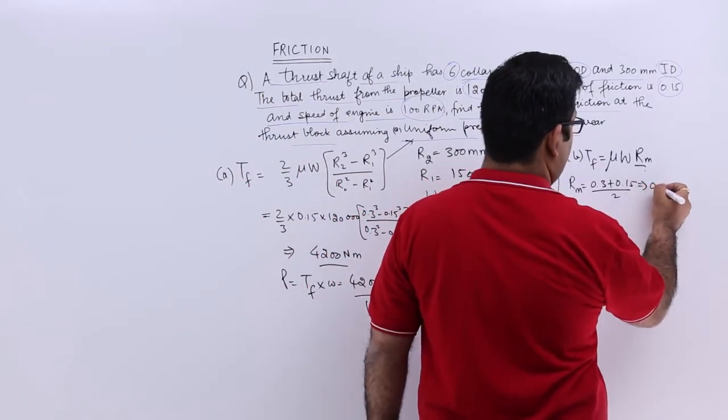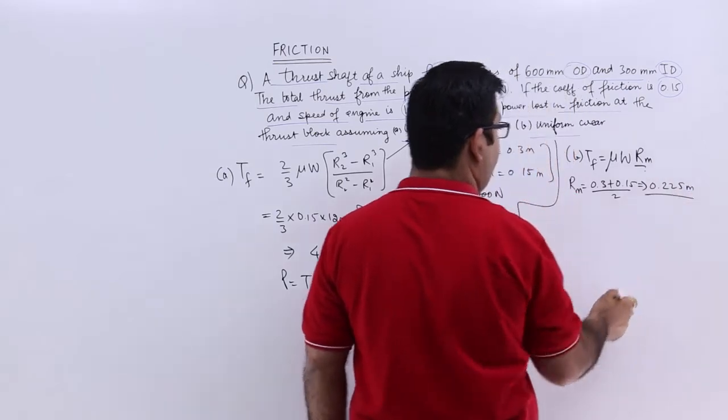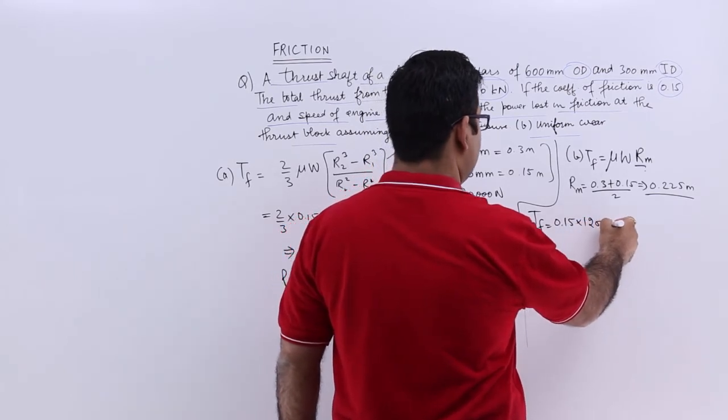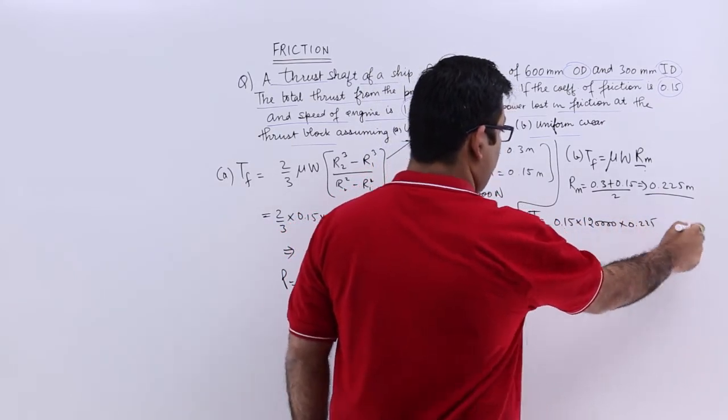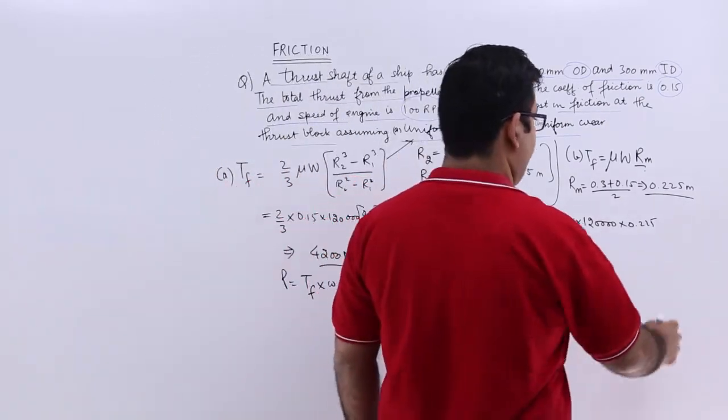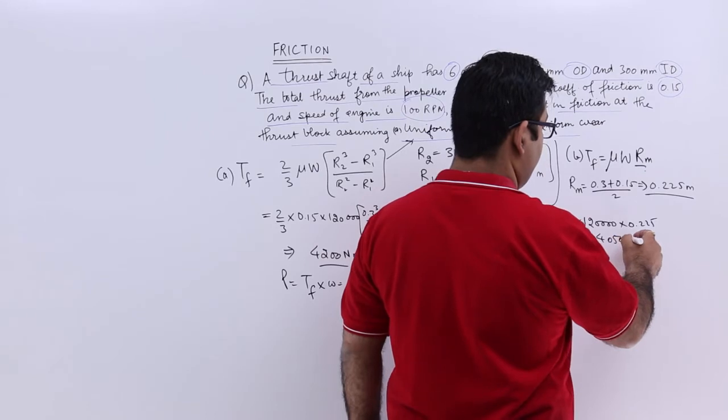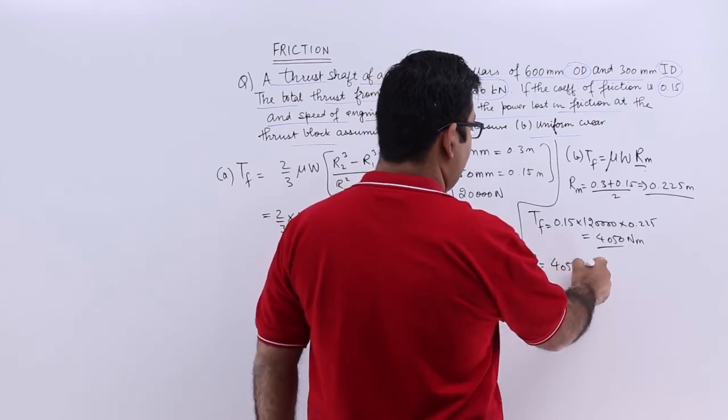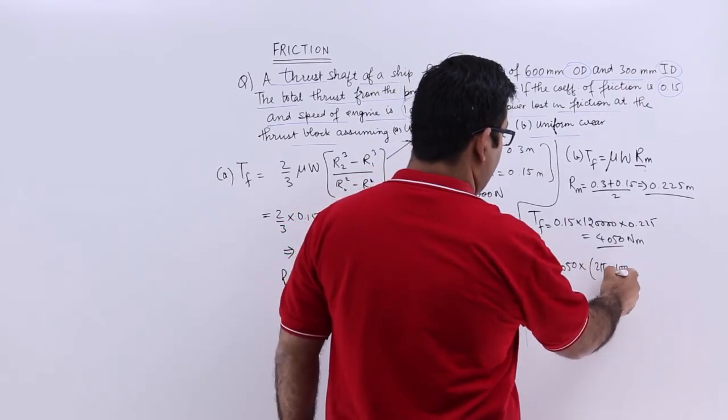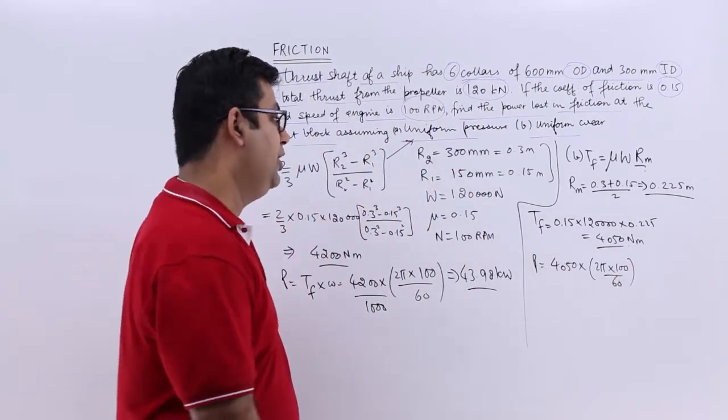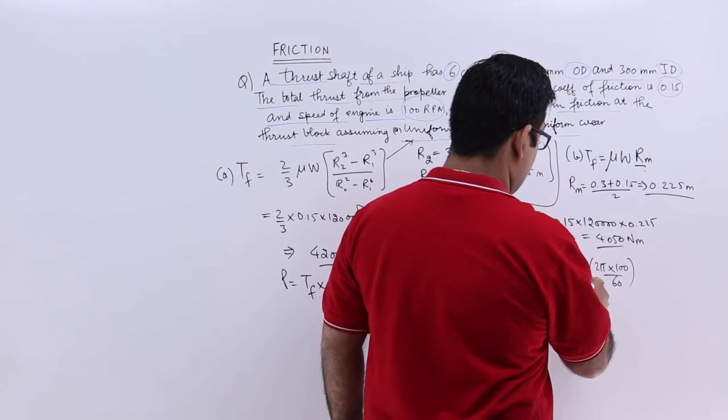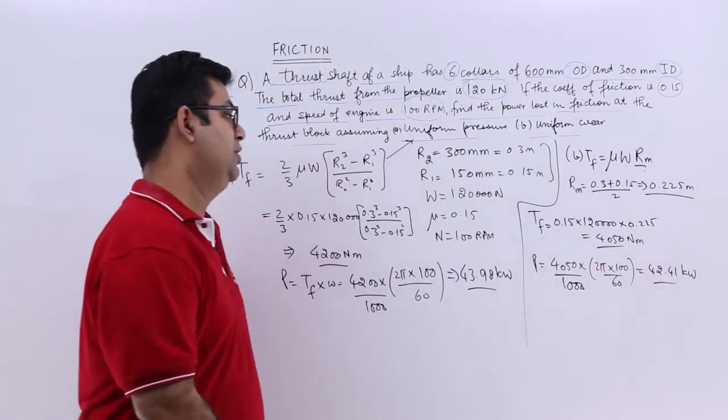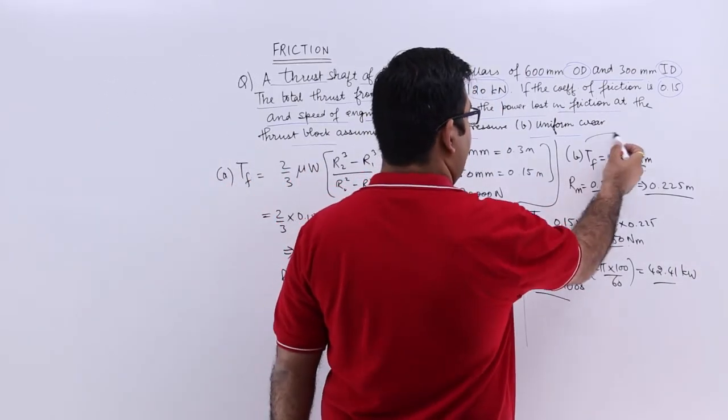We will put it in the formula. You will get 0.15 into 120 kilonewtons into 0.225. That gives you torque which is 4050. And the power loss would be 4050 into 2 pi into 100 upon 60, t into omega, that gives you 42.41 kilowatts. So this is the power lost due to friction for uniform wear.